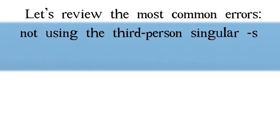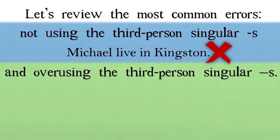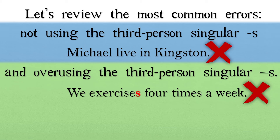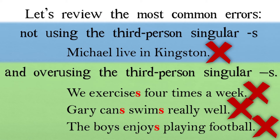Let's review the most common errors. Not using the third person singular S, as in: 'Michael live in Kingston.' And overusing the third person singular S, as in: 'We exercises four times a week,' 'Gary cans swims really well,' and 'The boys enjoys playing football.' All those extra S's should be removed.